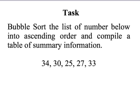You might like to pause the video and have a go at this task. It's fairly straightforward — just like the example, five numbers: 34, 30, 25, 27, and 33. Have a go at bubble sorting these into ascending order, then compile a table showing the number of comparisons and swaps on each pass, and the total number of comparisons and swaps at the end.